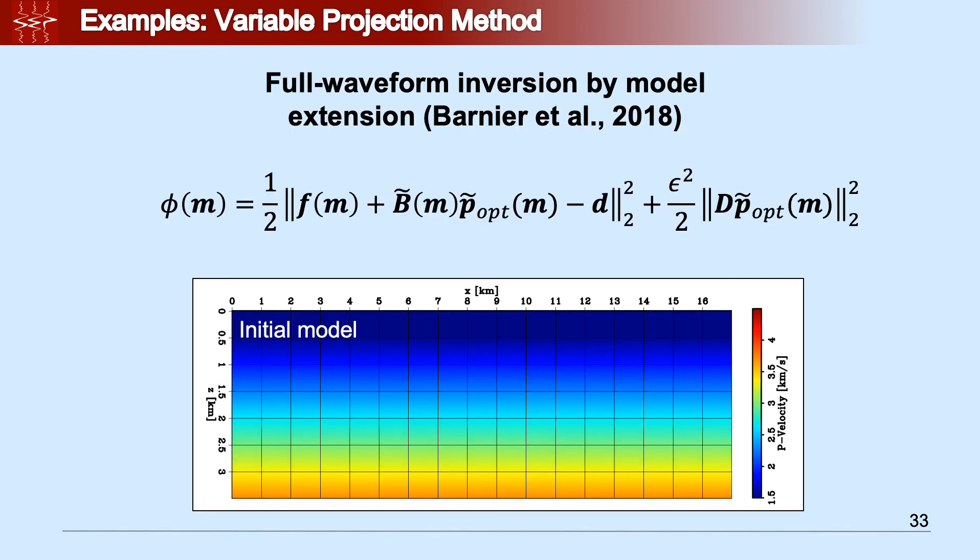The same exact implementation of the variable projection method that was applied to solve the very simple example that I showed you before, was also applied to solve full waveform inversion by model extension. This is a method that was proposed by Guillaume and I in 2018, in which we tried to minimize or mitigate all the cycle skipping issues of FWI. In this problem, we have to minimize the following objective function. F of M indicates the nonlinear wave equation operator, the same one that we applied in FWI that I explained before.